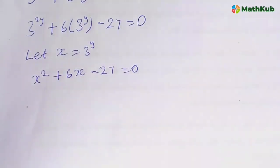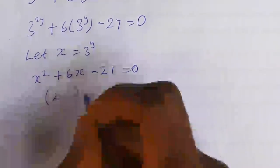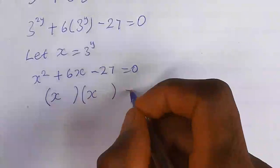In this case, this is a quadratic equation and we can use factorization method. For factorization method, you can open two brackets, this is x, then open another one x and close, equal to 0.